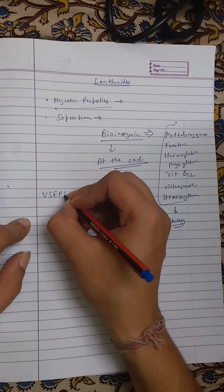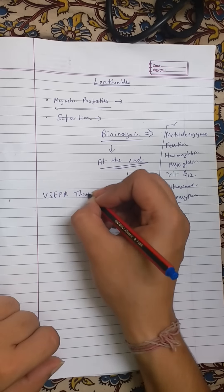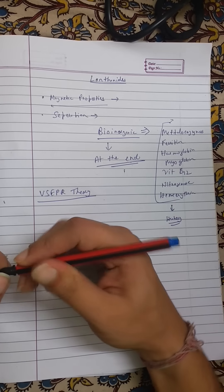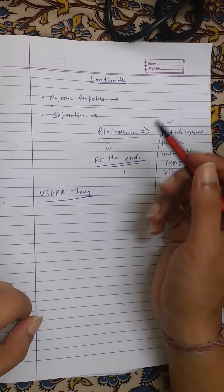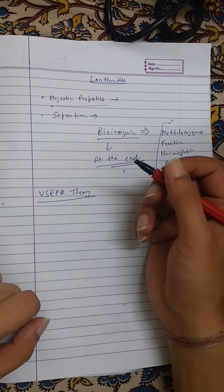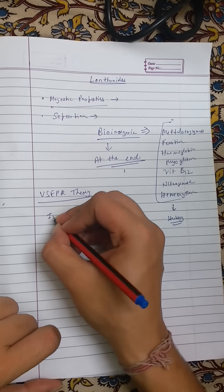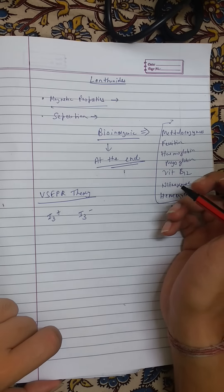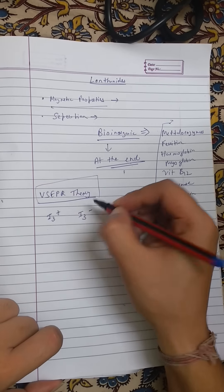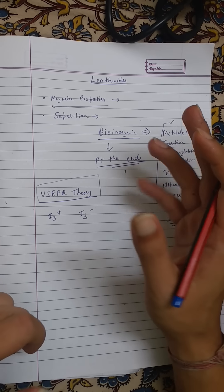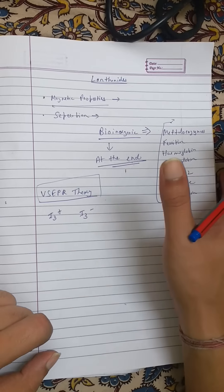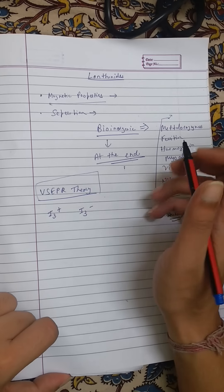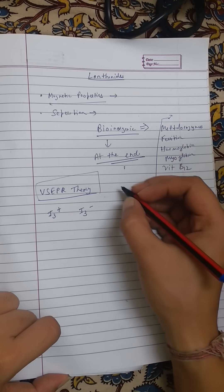There will always be a question from VSEPR theory. The questions are sometimes unusual — for example, asking the structure of I3+ or I3−. You should know how to find these structures and know the basic VSEPR rules, like what shape results from four bond pairs and two lone pairs, or three bond pairs and two lone pairs.